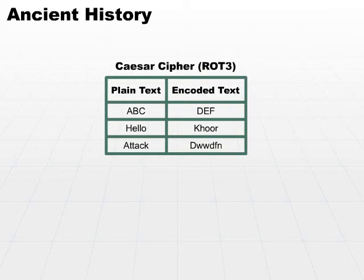In order to decode the text, you would just use the opposite approach. You would start off with your encoded text. D subtract 3 would become A, E subtract 3 becomes B, F subtract 3 becomes C. Again, very, very simple cipher, but it was smart enough to fool most of the people back at that particular time.